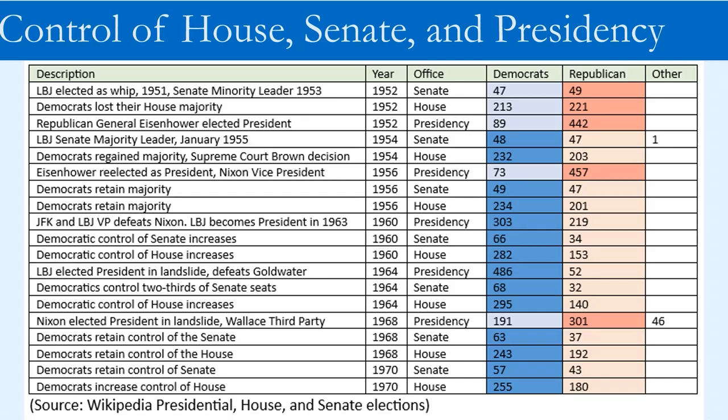When reflecting on LBJ's political career, it is helpful to know when the Democrats and Republicans were in control of the presidency and Congress. For most of the years LBJ served in public office, the Democratic Party controlled the Congress and the presidency. When General Eisenhower was elected president in 1952, the Republicans gained control of the Senate and the House, but the Democrats regained control of both houses in the 1954 midterm elections, retained control when Eisenhower won re-election in 1956, and even when Nixon won the presidency in 1968.